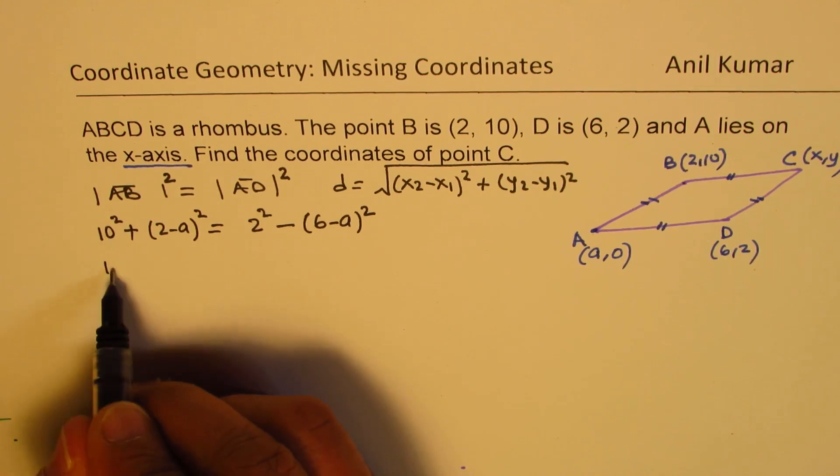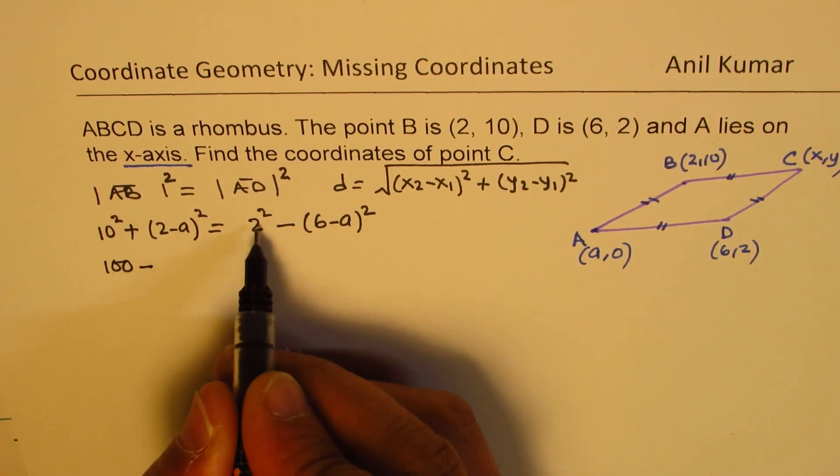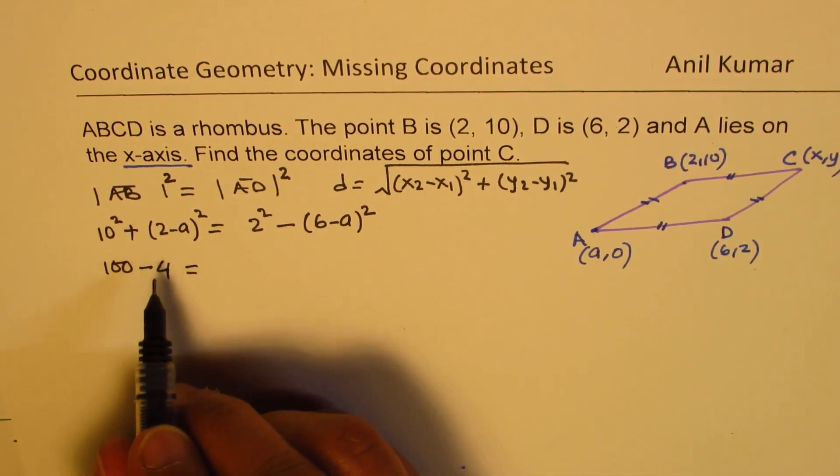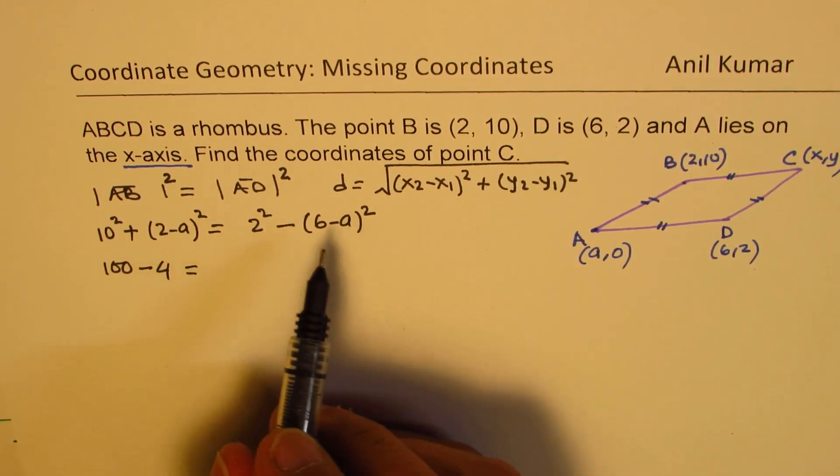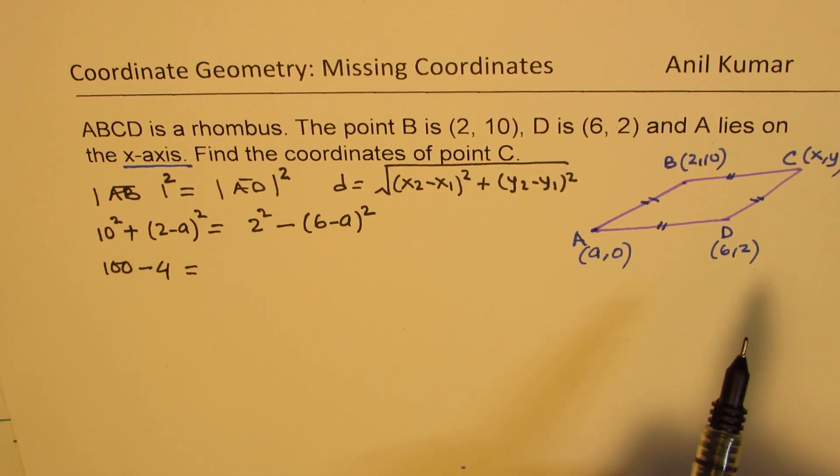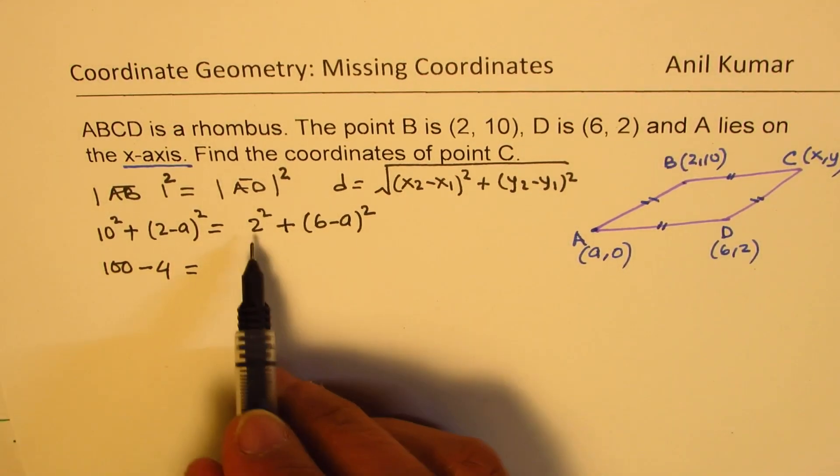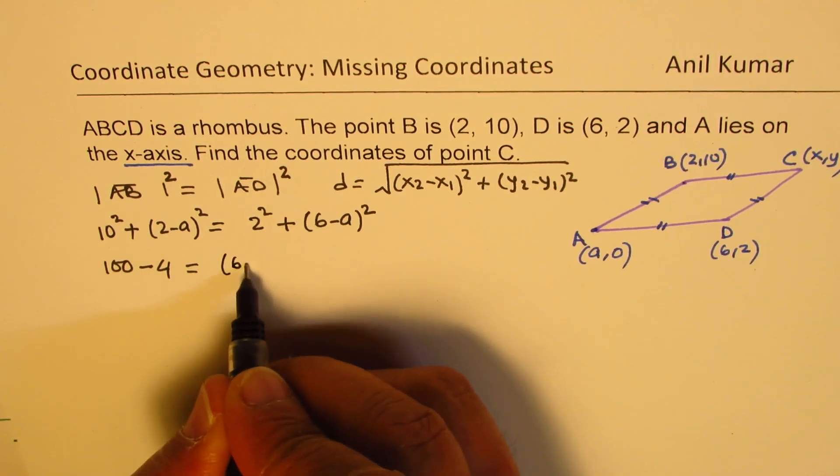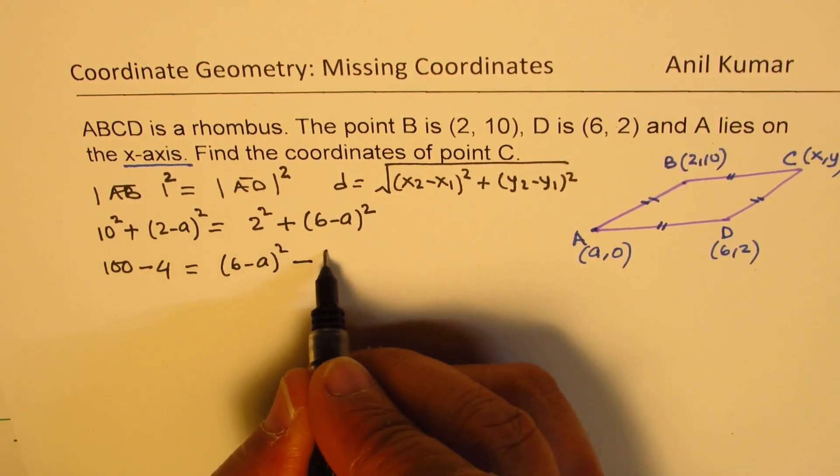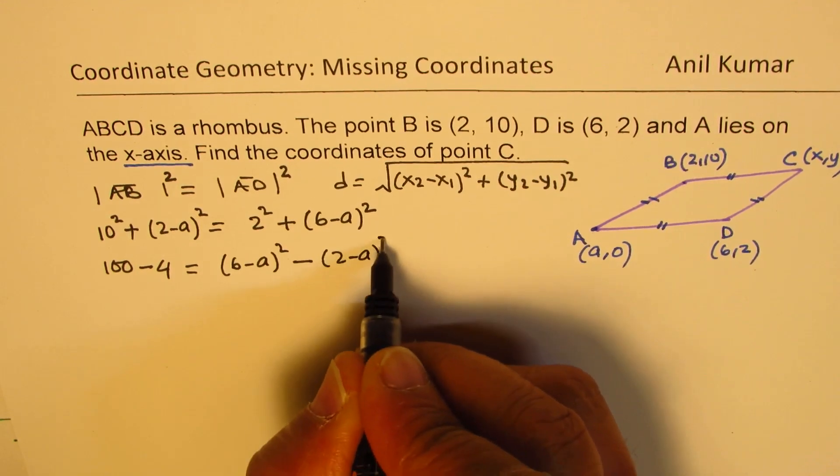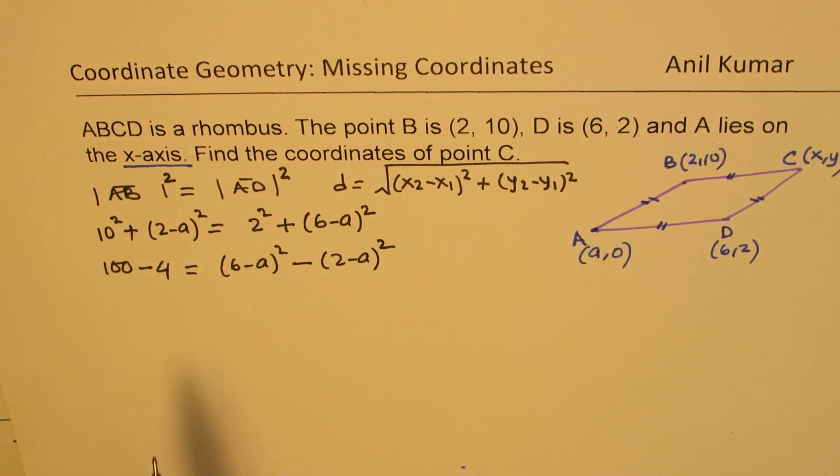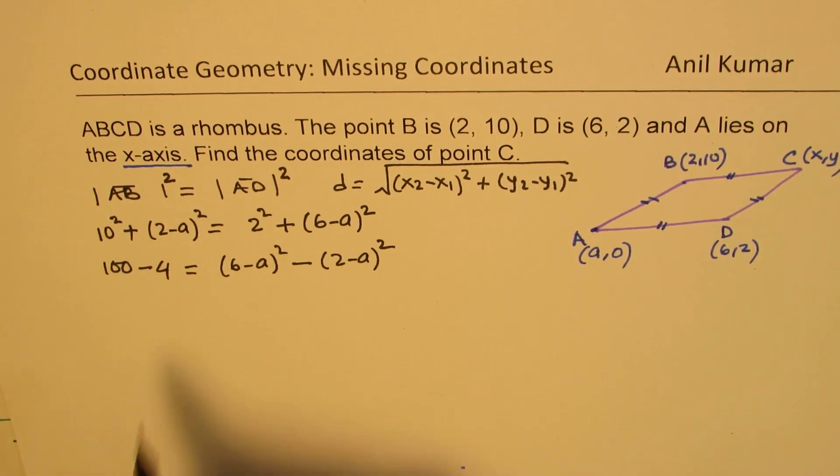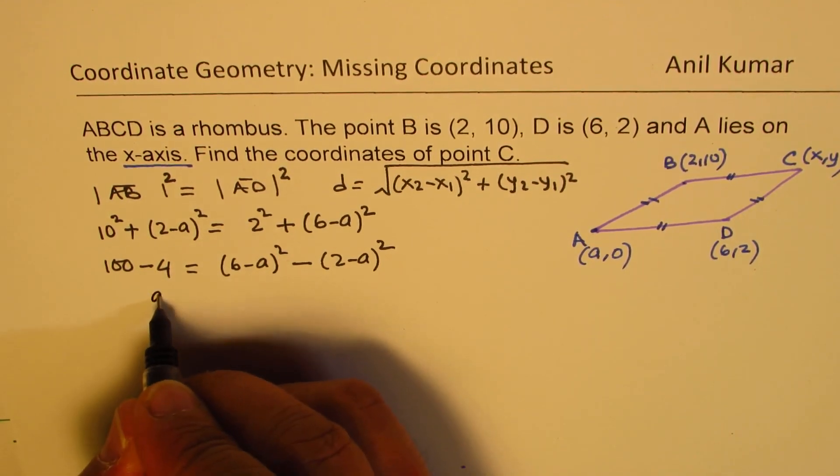Now to solve this, the easiest method will be to use difference of squares. We have 10², which is 100, minus—let's bring 2² here, which is 4—equals to... So we have (6-A)² minus (2-A)². So we just rearranged, took (2-A) to the right side and 2² to the left side. 100 minus 4 is 96. And here we have difference of squares.